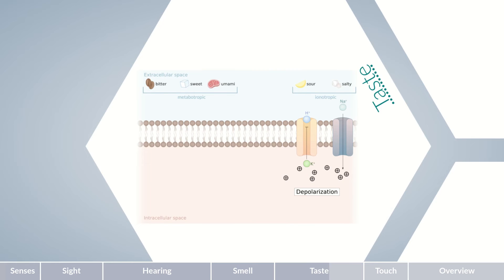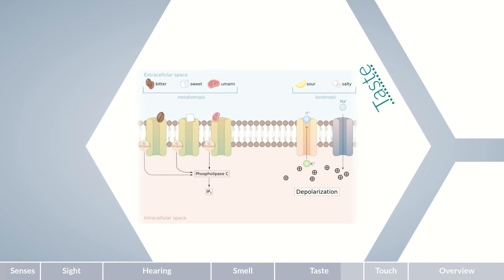The taste molecules are extracellularly bound to matching receptors and are bound intracellularly to a G-protein. The G-protein stimulates phospholipase C, which cleaves the membrane phospholipid PIP2 into the second messengers IP3 and DAG. IP3 subsequently binds to calcium channels in the endoplasmic reticulum, leading to the release of calcium from the endoplasmic reticulum into the cytosol, initiating various downstream processes.